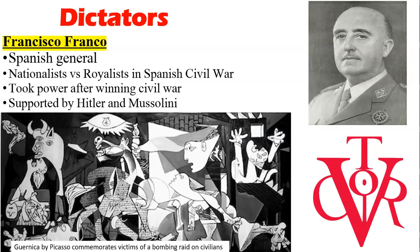Here's an extra dictator — Francisco Franco, the Spanish general. If you have knowledge of him, great; if he's new to you, it's worth reading about and he'll probably appear in your books. This was the Nationalists versus the Royalists in the Spanish Civil War. Franco was a nationalist who took power after winning the Civil War, supported by Hitler and Mussolini. Picasso painted the famous painting Guernica to commemorate the victims of a bombing raid on civilians.